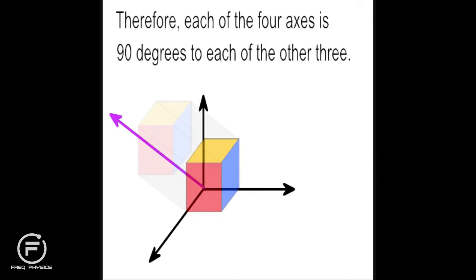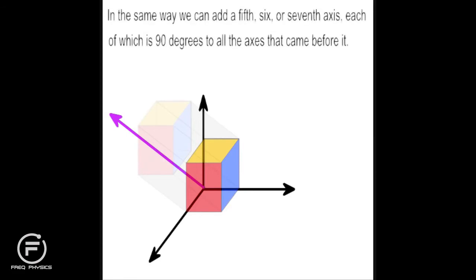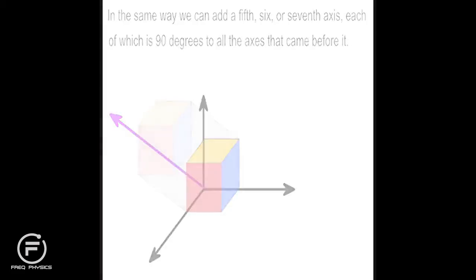Therefore, each of the four axes is 90 degrees to the other two. In the same way we can add a fifth, sixth, or seventh axis, each of which is 90 degrees to all the axes that came before it.